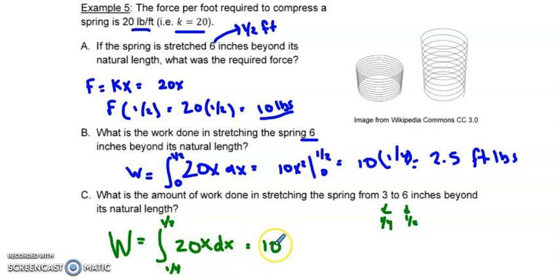So when I integrate, remember I got 10x squared, but this time I'm integrating from one-fourth to one-half instead of zero to one-half. So when I evaluate at one-half, I know I get 2.5.